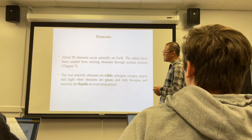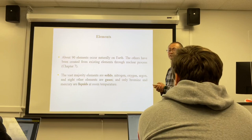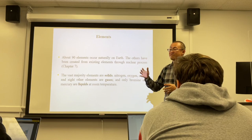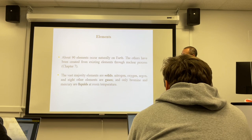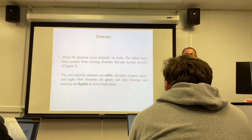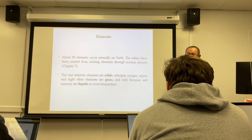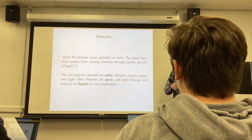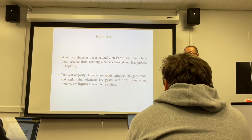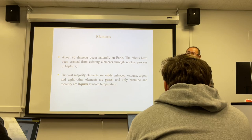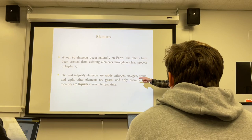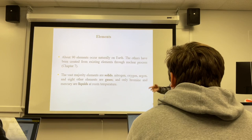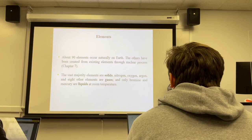Out of the 118 elements, about 90 occur naturally on Earth; the others are synthesized by nuclear processes. For naturally existing elements, most are solids. Eight are gases and only two are liquids. You need to memorize the two liquids and the eight gases. The two liquids are bromine and mercury.